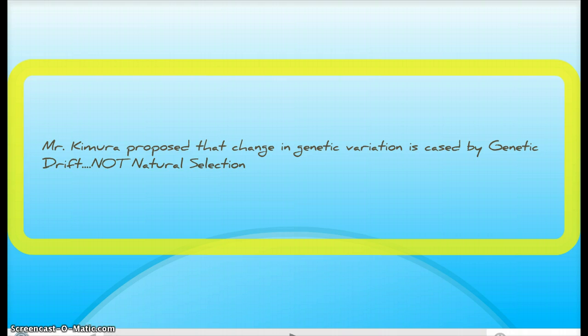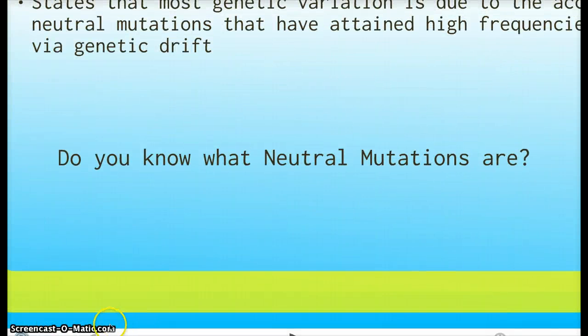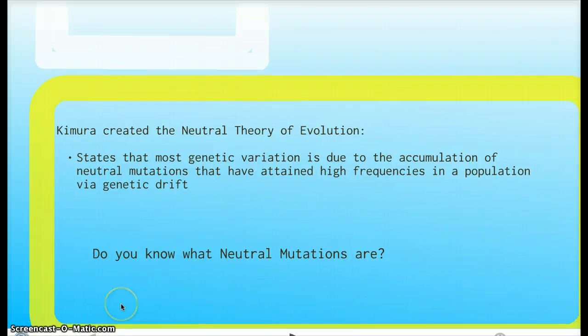Mr. Kimura proposed that the change in genetic variation is caused by genetic drift, not natural selection. Let's see why.